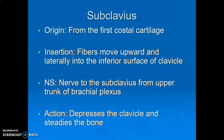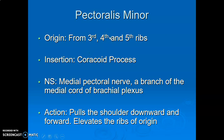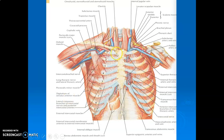Subclavius muscle comes from the first costal cartilage, with fibers moving upward to insert onto the inferior surface of the clavicle. It is innervated by the nerve to subclavius from the upper trunk of the brachial plexus. Its action is to depress the clavicle and steady the bone. Pectoralis minor comes from the third, fourth, and fifth costal chondral junctions, inserts onto the coracoid process, and is innervated by the medial pectoral nerve from the medial cord of the brachial plexus.